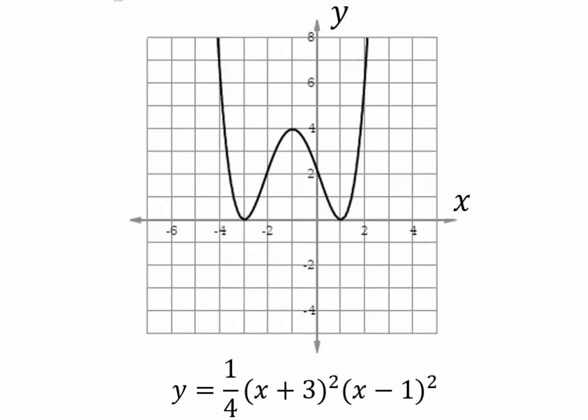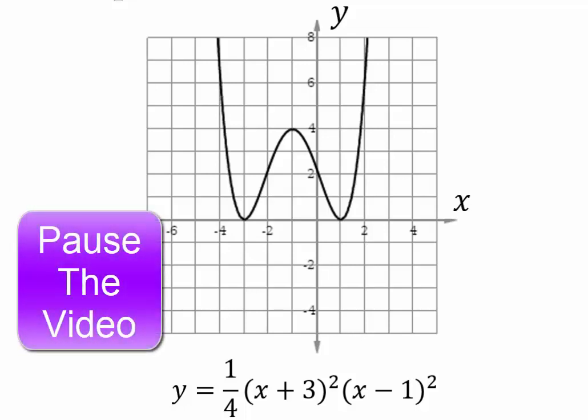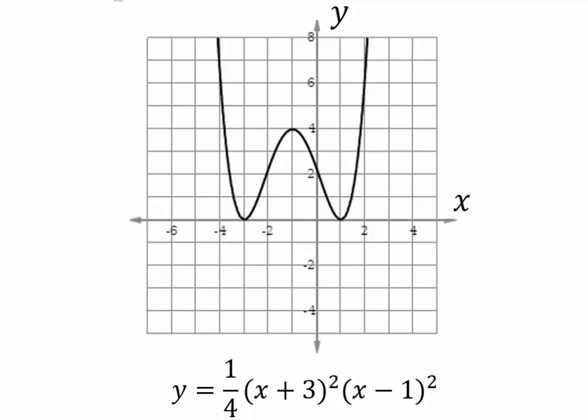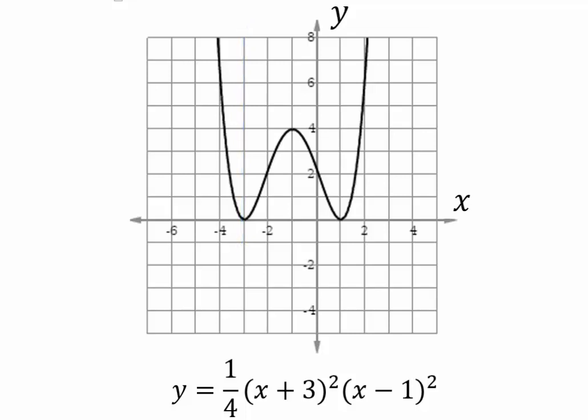Take a look at the relation y equals one quarter times (x plus 3) bracket squared times (x minus 1) bracket squared. Determine if y is a function of x. In this case, every single vertical line intersects the graph in exactly one point. So y is a function of x here.